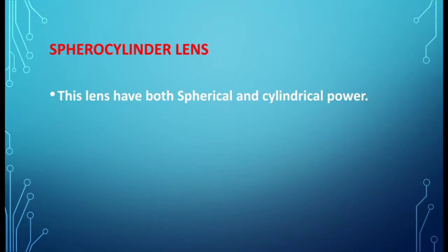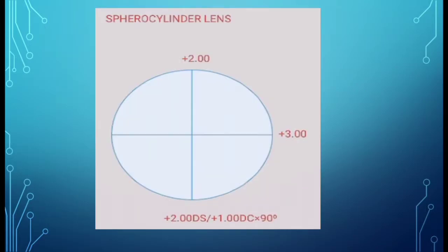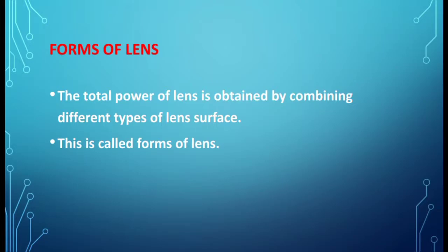Next is the sphero-cylinder lens. This type of lens has both spherical and cylindrical power. In this example, plus 2 diopter spherical power and plus 1 diopter cylinder power are present. The spherical power is present in both meridians, but the cylinder power is present in only one meridian. That's why it is referred to as a sphero-cylinder lens.